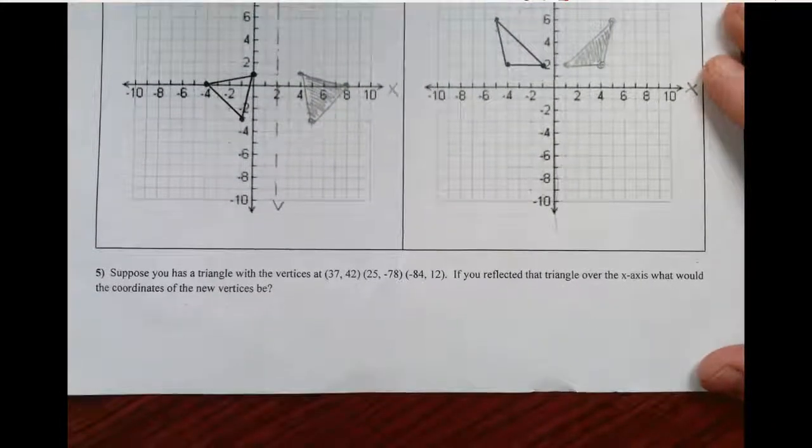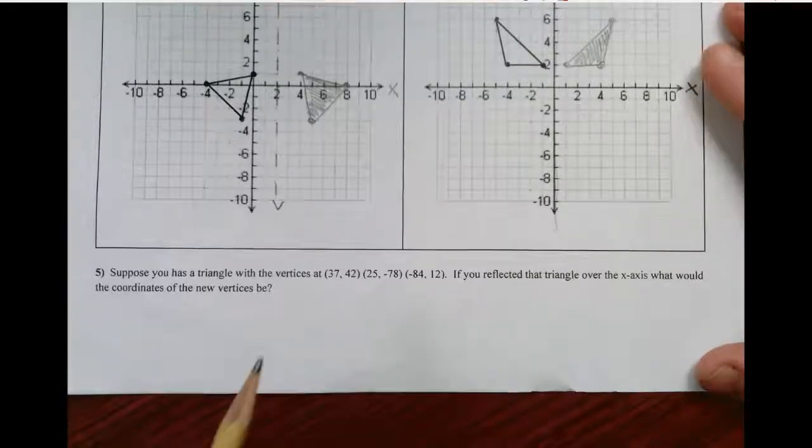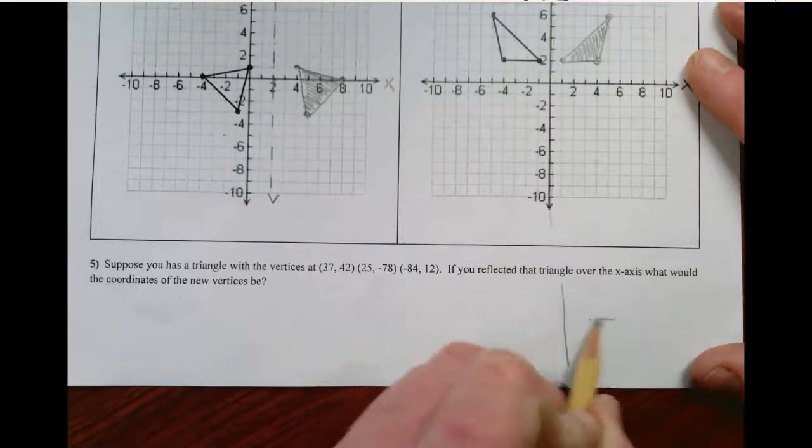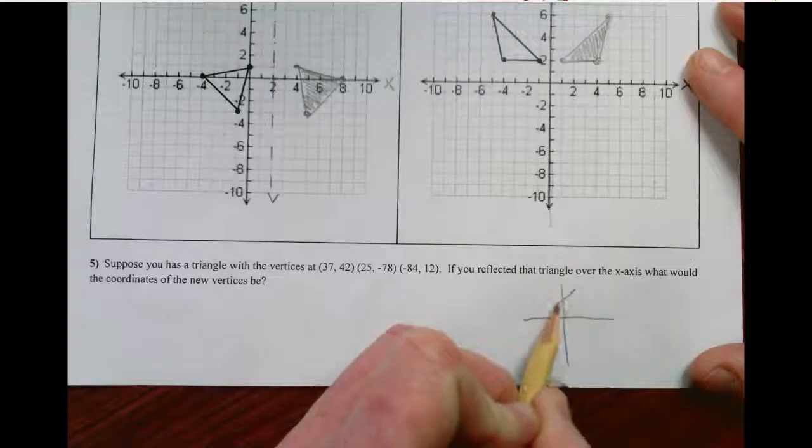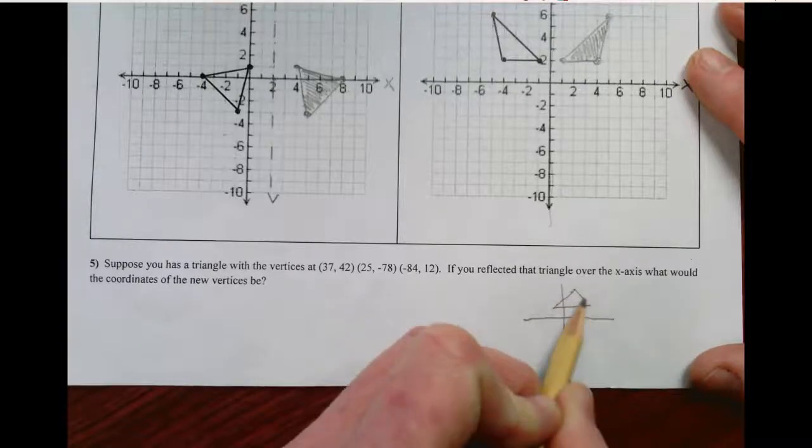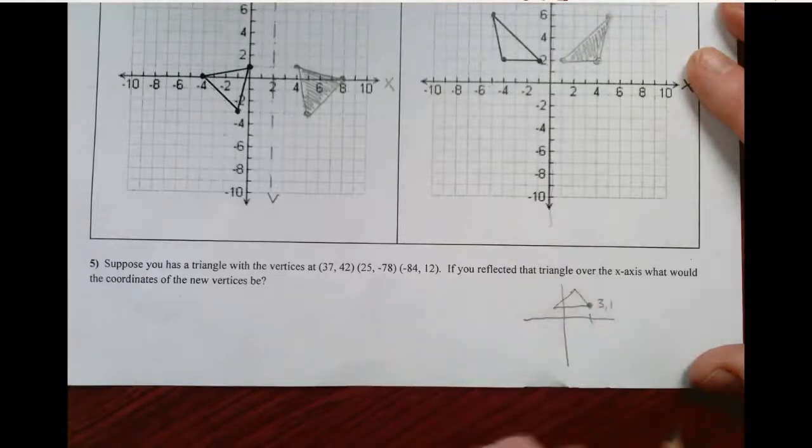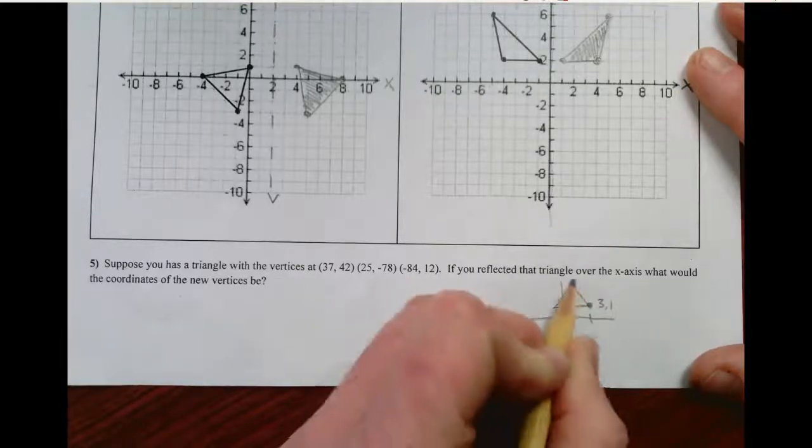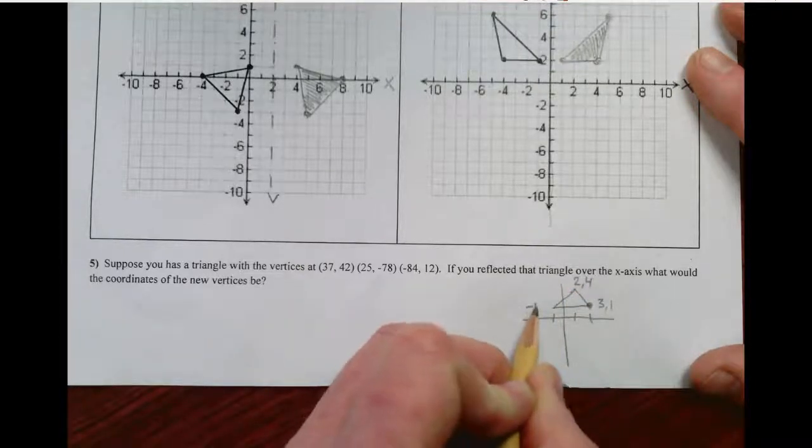Suppose you have a triangle with these vertices. If you reflected that triangle over the x-axis, what would the coordinates of the new vertices be? I'm going to draw a little sketch here. Let's say we have this triangle, and let's pretend this point is like 3, 1. This point here is 2, 4. I'm just making these up. This point here is negative 1, 1.